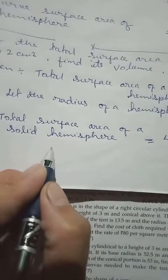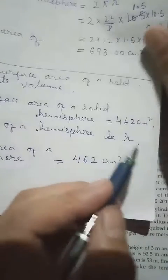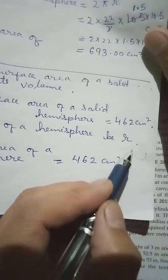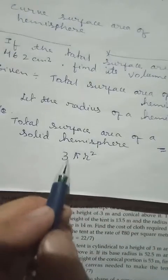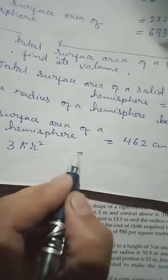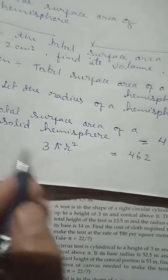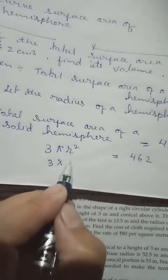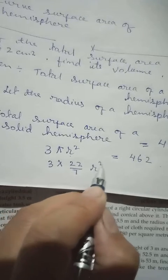Because we have the curved surface and then one circle, so that is why the total surface area is 3πr squared. It is equal to 462 cm square. So our aim is to get R. π we know is 22/7, R we don't know, let it be like that.